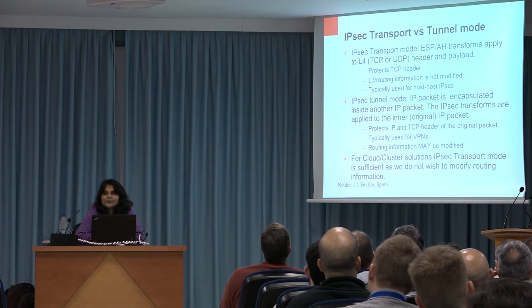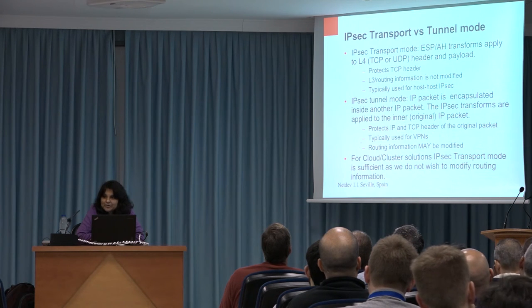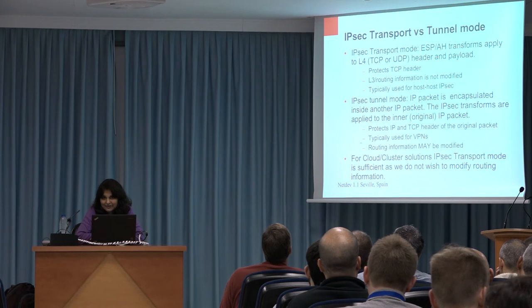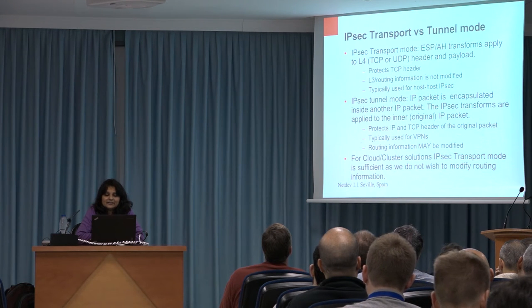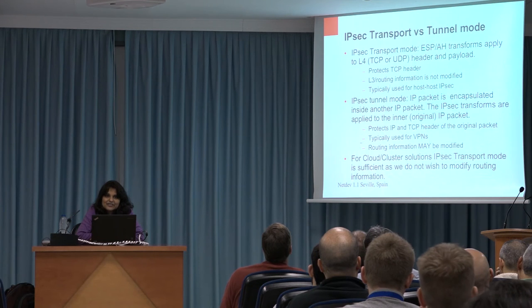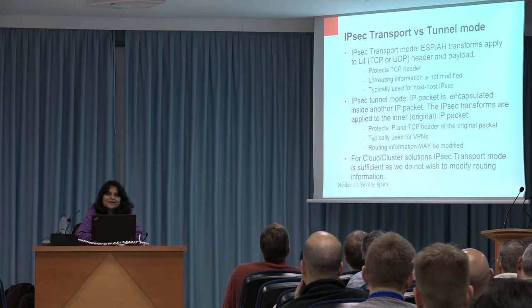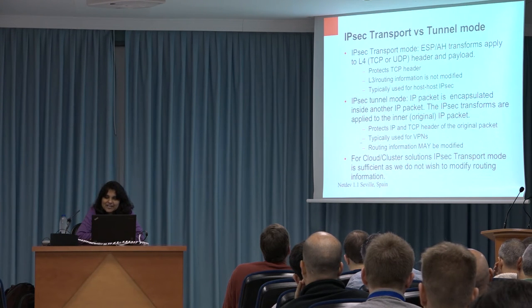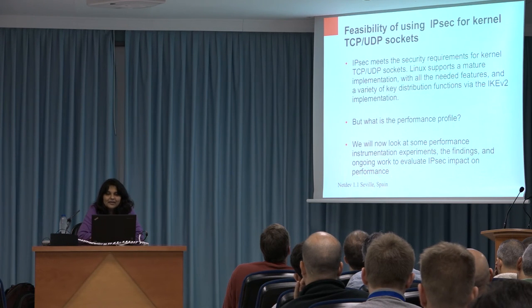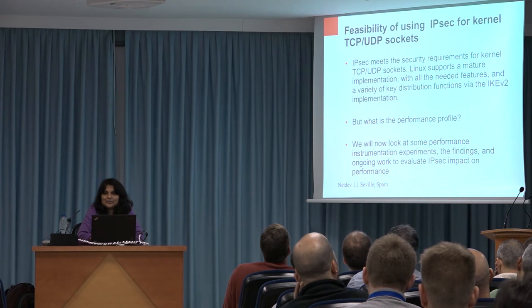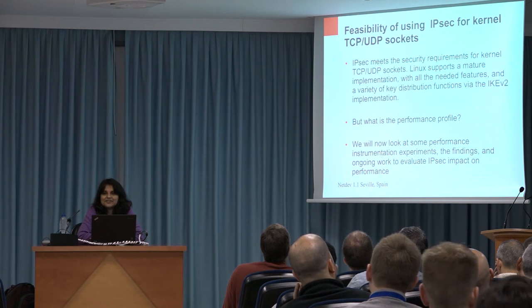IPsec can be used in transport mode or tunnel mode, which determines how much you encrypt. In transport mode, you apply the transform on the TCP or UDP header and data, without changing the IP header or routing. In tunnel mode, you take the whole IP packet, encapsulate it inside another IP packet, and the inner packet is transformed — used in the VPN case where the outer IP packet contains VPN source and destination. For data center and cluster, routing information usually comes from a cloud controller or cluster topology, so transport mode is usually sufficient, but tunnel mode is available.